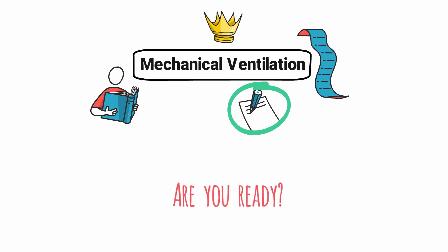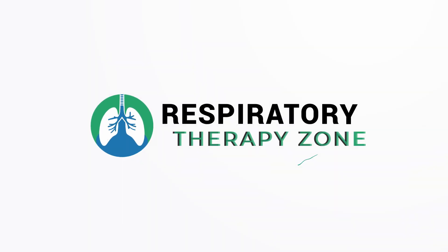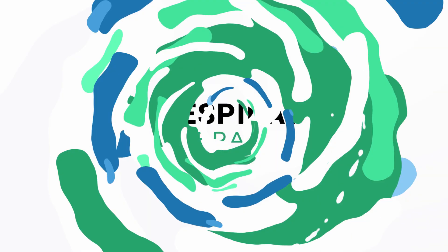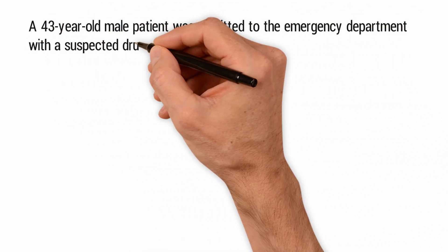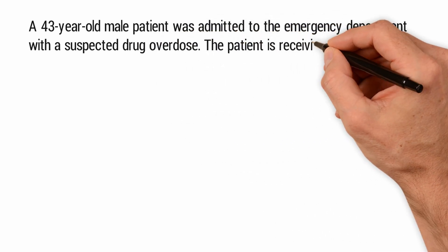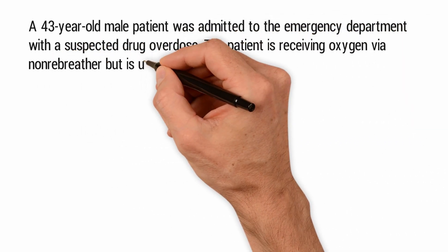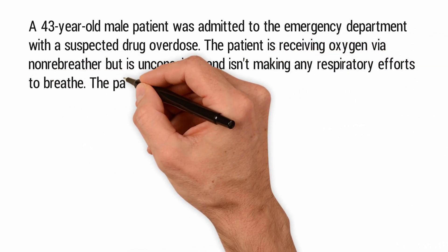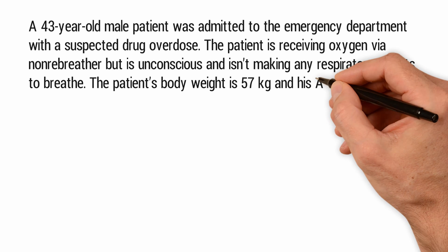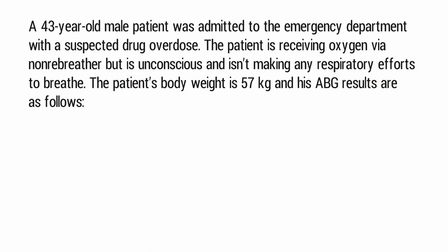So if you're ready, let's go ahead and get started. A 43-year-old male patient was admitted to the emergency department with a suspected drug overdose. The patient is receiving oxygen via non-rebreather, but is unconscious and isn't making any respiratory efforts to breathe. The patient's body weight is 57 kilograms, and his ABG results are as follows.